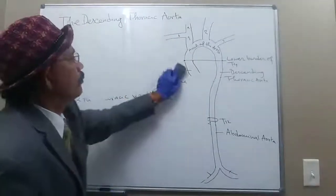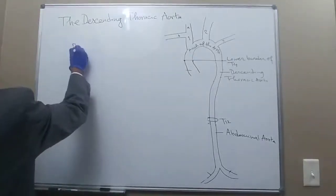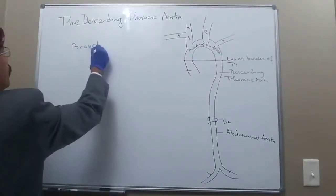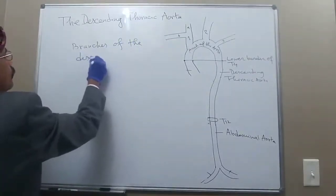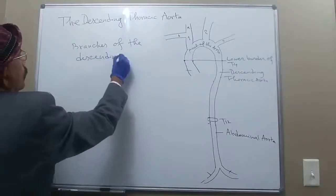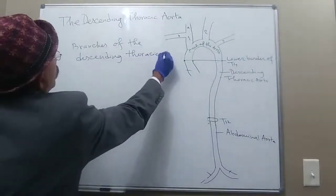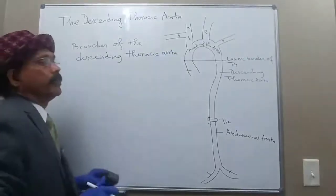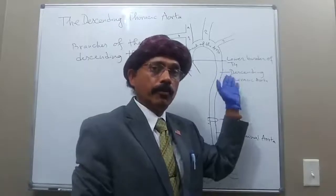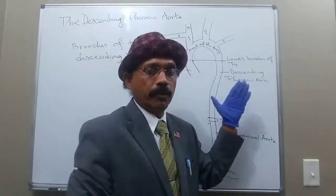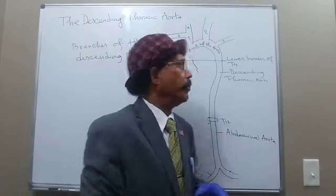Now we go to the branches of the descending thoracic aorta. Remember that in its course, it courses posteriorly — it is in front of the vertebra — so it is a content of the posterior mediastinum.